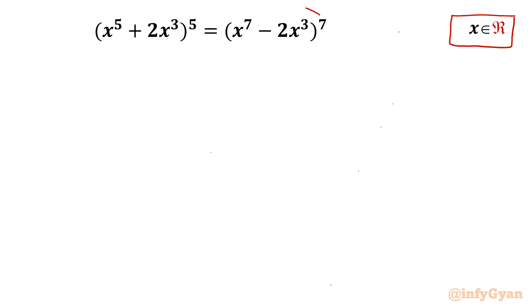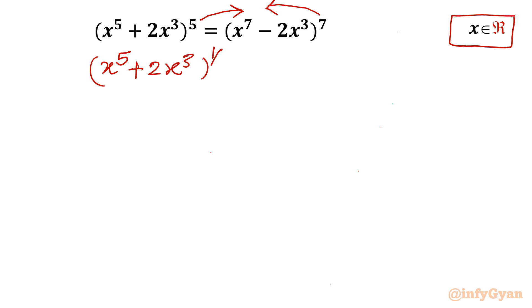I will consider the power 7 applied to the left hand side and the power 5 applied to the right hand side. So the equation will look like: (x⁵ + 2x³)^(1/7) equal to (x⁷ - 2x³)^(1/5).